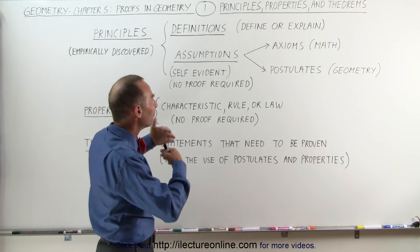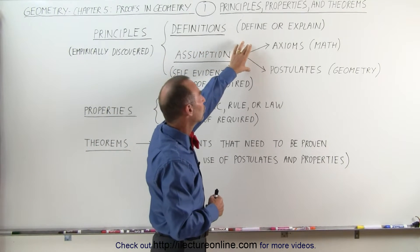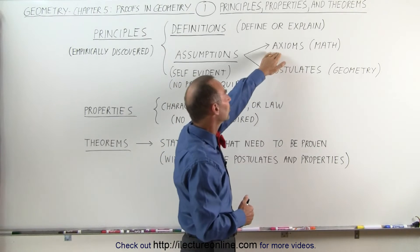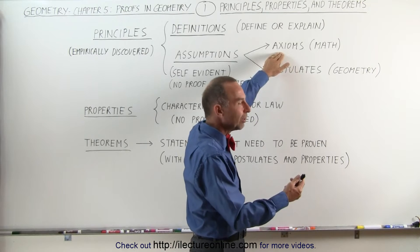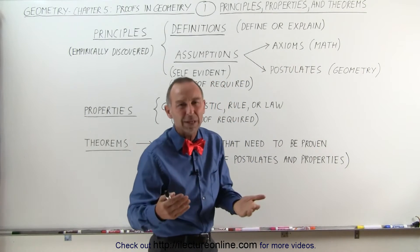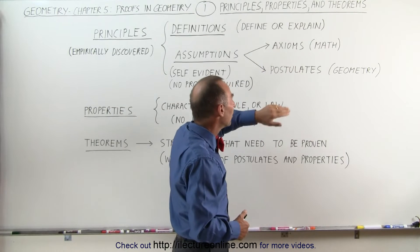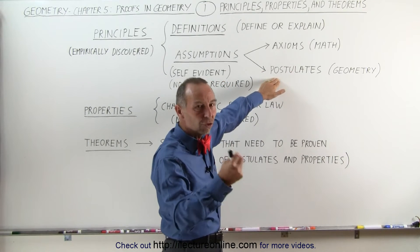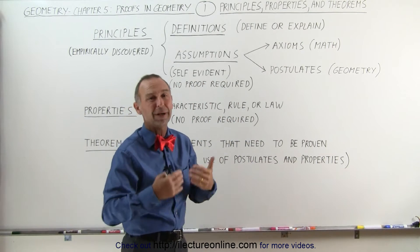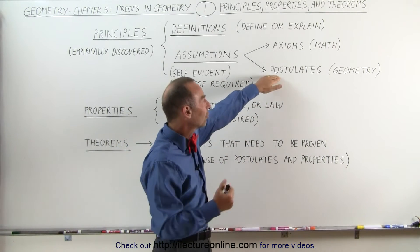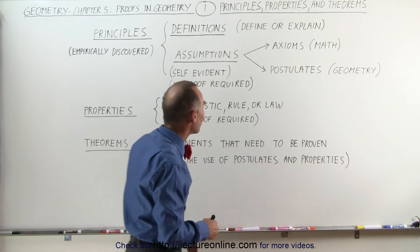They're true in various ways, and we divide them into two categories. The two categories are called axioms and postulates. Axioms is something that you use in math, like in algebra. Say, for example, that A plus B equals B plus A. That would be considered an axiom. But postulates are specific to geometry, where we deal with comparing angles, and comparing lines, and comparing planes, and figures, and things like that. So, that's defined under postulates, and that is used in geometry.